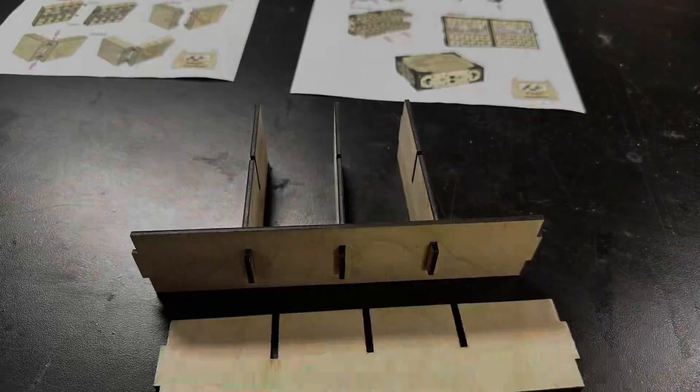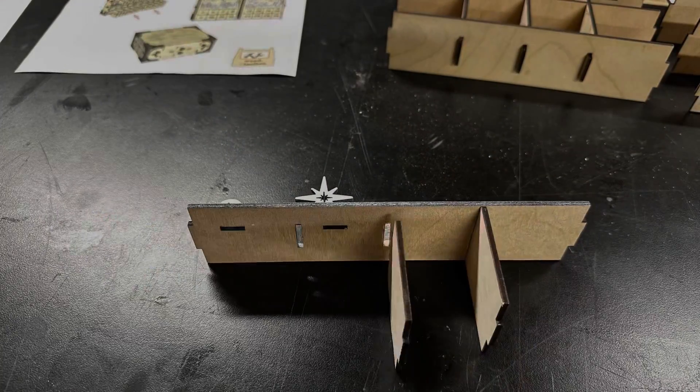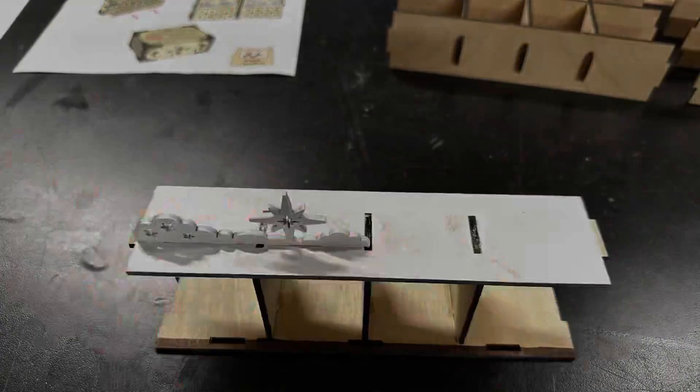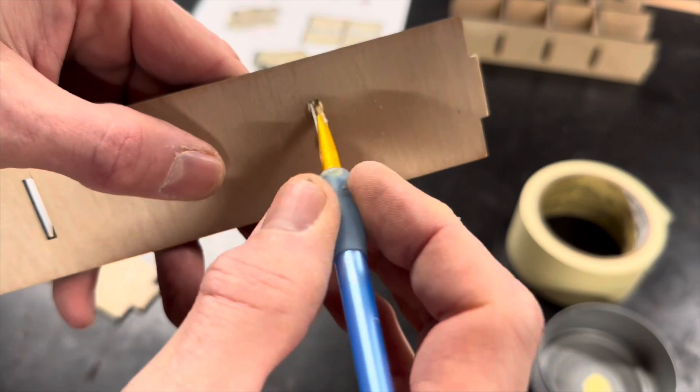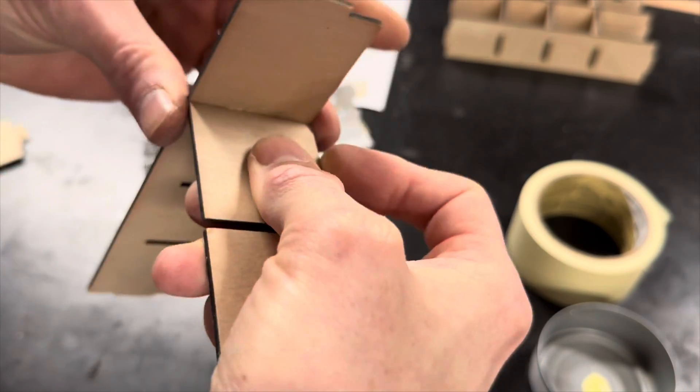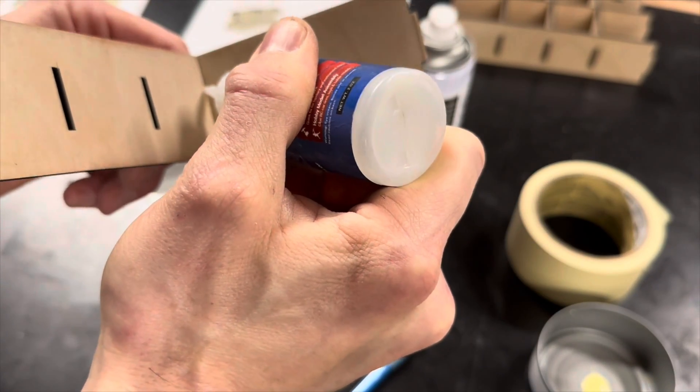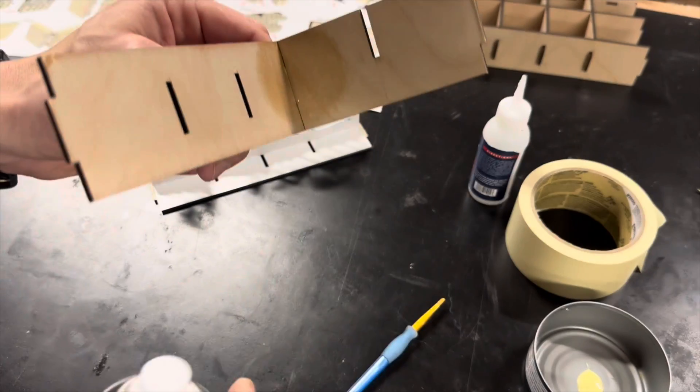After the paint and stain work, I started final assembly. For many of these larger parts, I used wood glue, and then to avoid having to use any kind of tape or clamp, I added a little bit of star bond medium to secure the joint while the wood glue dried.